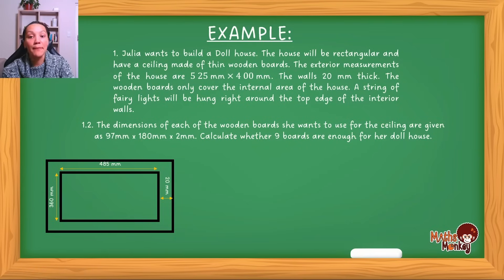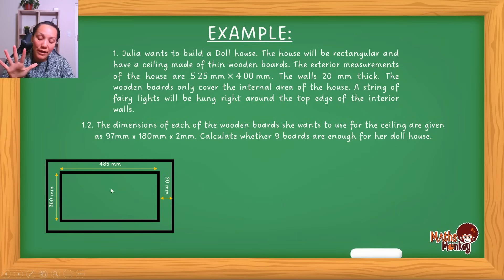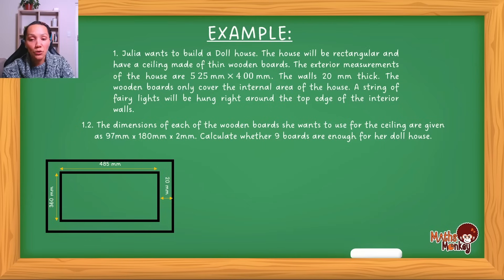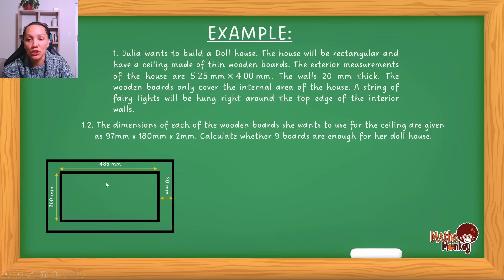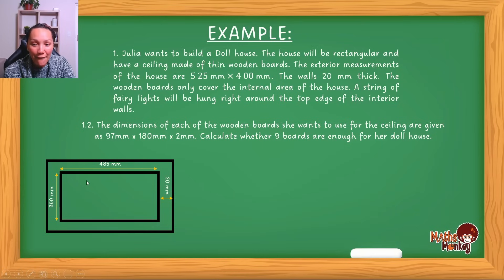Now let's look at the second question. The dimensions of each wooden board she wants to use for the ceiling are 97 millimeters by 180 millimeters by 2 millimeters. Calculate whether nine boards are enough for the dollhouse. She's going to place the wooden boards across the interior part only. To answer this, look at the total interior length — 485 — and divide by the board length of 97, which gives a perfect answer of 5. Then 360 divided by the board width of 180 gives 2.